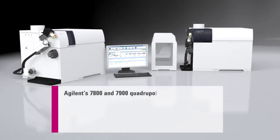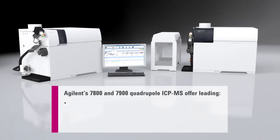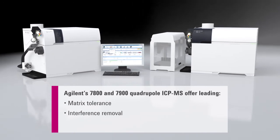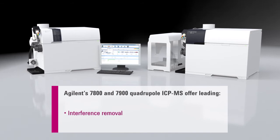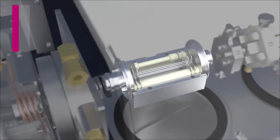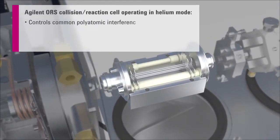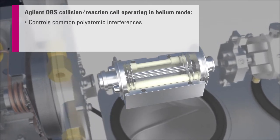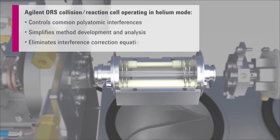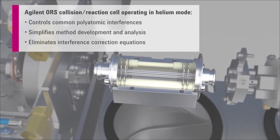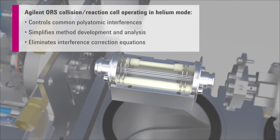Agilent's quadruple ICP-MS instruments provide market-leading performance for matrix tolerance, interference control, and linear dynamic range. Since the year 2000, collision reaction cells have dramatically improved the control of interferences in ICP-MS, particularly for complex, high-matrix samples. This is one of the main reasons for the wider adoption of ICP-MS in industry and commercial laboratories.